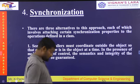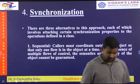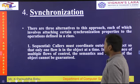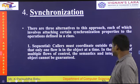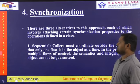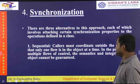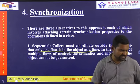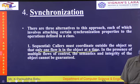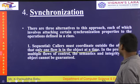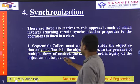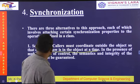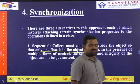In sequential synchronization, callers must coordinate outside the objects so that only one flow is in the object at a time. In the presence of multiple flows of control, the semantics and integrity of the object cannot be guaranteed.